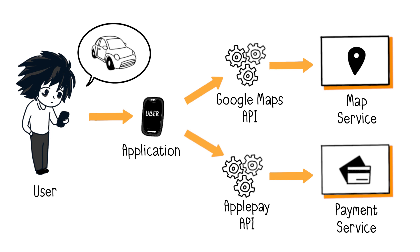Hence, the Uber application consumes services provided by two different APIs from other companies. In return for using these services, Uber pays fees to Apple and Google Maps. As for how Google Maps determines routes, or how Apple handles banking transactions, that's not Uber's concern — the providers of these services take care of that.